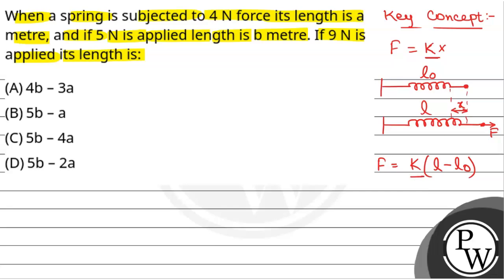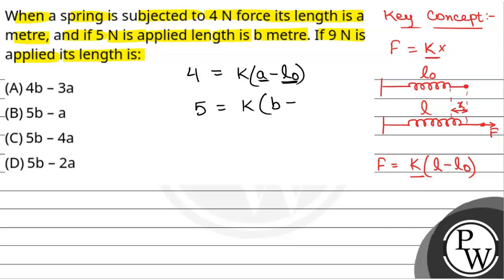We have been given that when force is 4N, its length is a meters, so that gives us: 4 = k into (A minus L0), where L0 is the original length of the spring. And when force is 5N, the length of the spring is b meters, so 5 = k into (B minus L0), where k is the spring constant. This is equation 1 and equation 2.